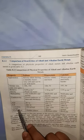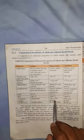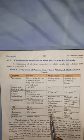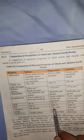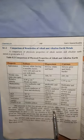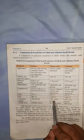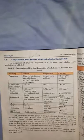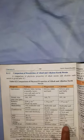For ionization energy: from left to right, ionization energy increases because nuclear charge increases, attraction increases, and size decreases. From top to bottom, ionization energy decreases because nuclear charge decreases and the number of shells increases. Therefore, magnesium has a greater ionization energy than calcium, since calcium is below magnesium in the same group.